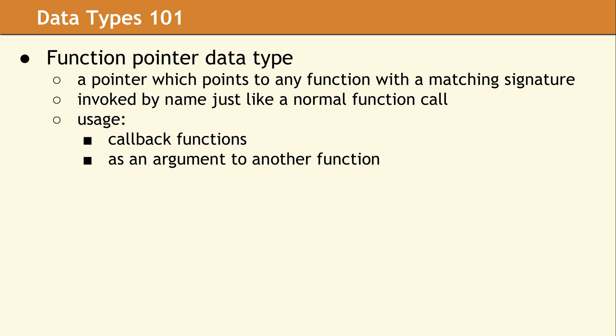The function pointer data type is another kind of pointer, but it points to code instead of data. It can point to any function with a signature that matches the way the function pointer was declared. It's invoked by name, just like a normal function call would be. And this is often used in C for callback functions, which is when you pass a function as an argument to another function. It's not used as much in C++ since we have more expressive techniques available to us, but it still exists and is used.